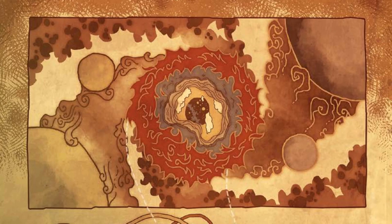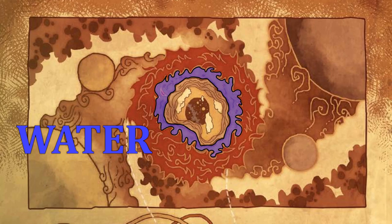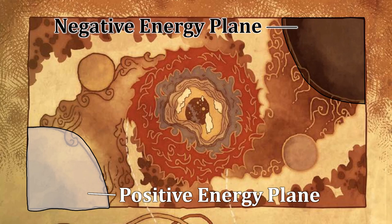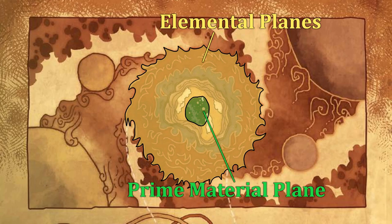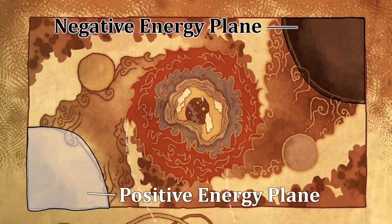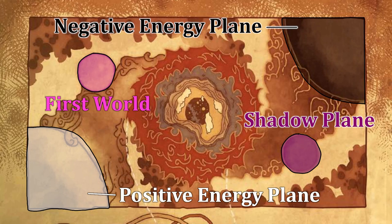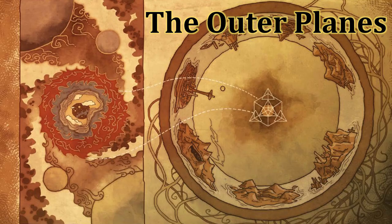The inner planes are composed of the basic essences of reality: the four elements — air, earth, fire, and water — as well as the two poles of magical energy: life-giving positive energy and life-draining negative energy. In classical cosmological representation, the elemental planes serve as layered shells around the prime material universe, while positive and negative energy exist as oppositional poles. The inner planes also include the First World, a vibrant magnification of the universe enhanced by its position between the material plane and the positive energy plane, and the Shadow Plane, a murky reflection cast against the negative energy plane.